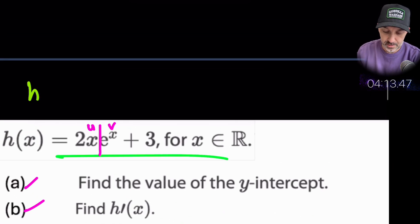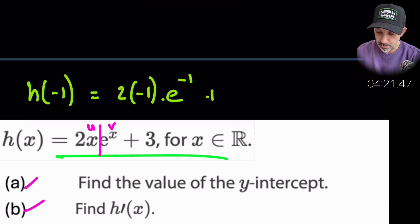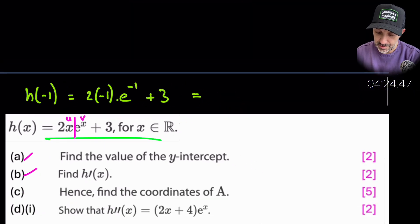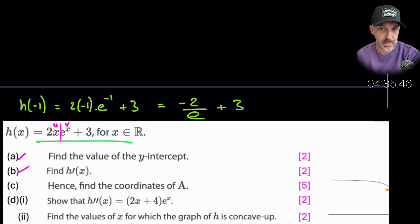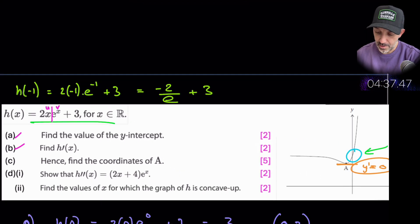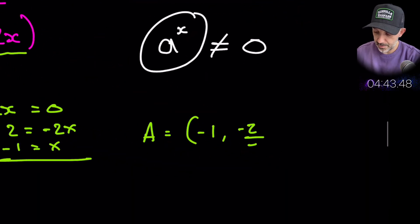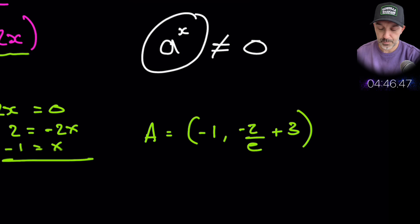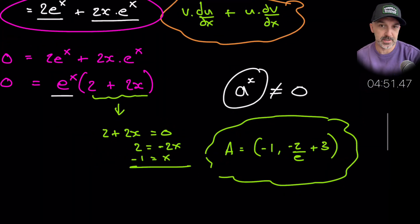We've found x = −1 but we still need the y-coordinate, so we substitute x = −1 into the original function. That gives 2(−1)e^(−1) + 3 = −2e^(−1) + 3 = −2/e + 3. So the coordinate of A is (−1, 3 − 2/e), leaving it as an exact value in terms of e.